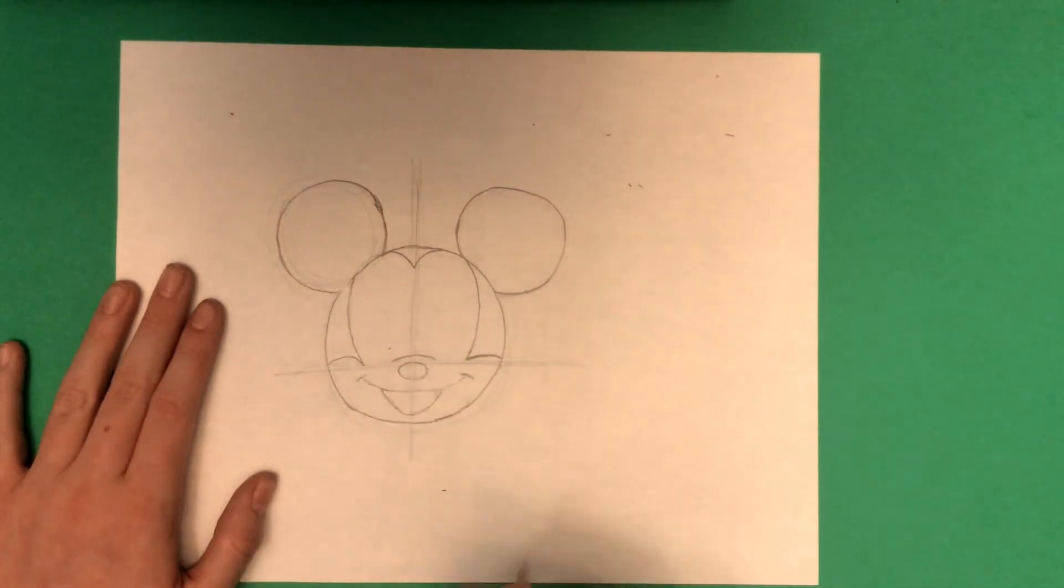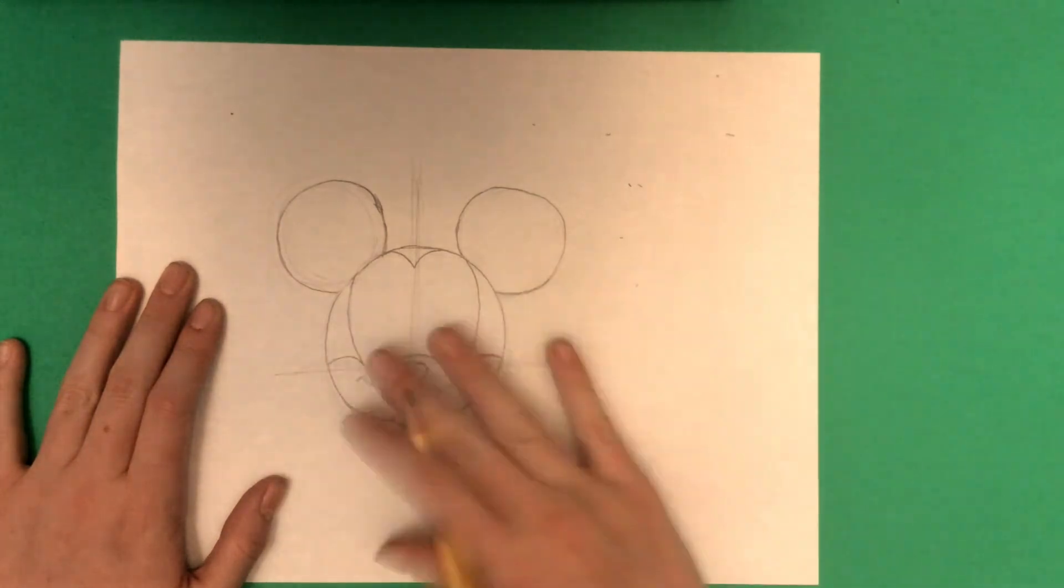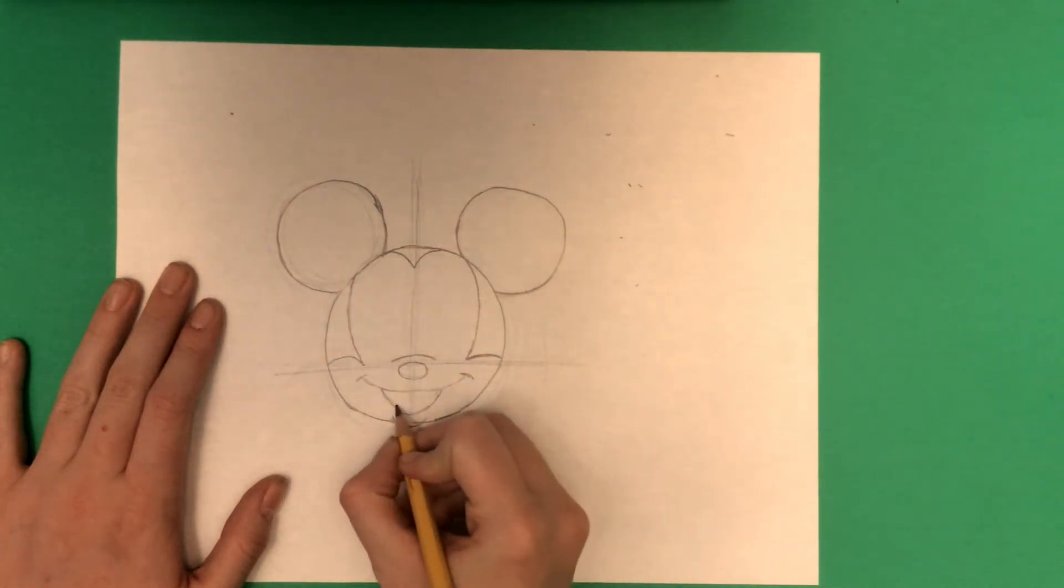Next up is Mickey's chin. You just make a small curve under his mouth. Now that we're done with that, we are going to make his tongue. First, just make a small diagonal curve in the middle. Then connect that with another curve that overlaps it.